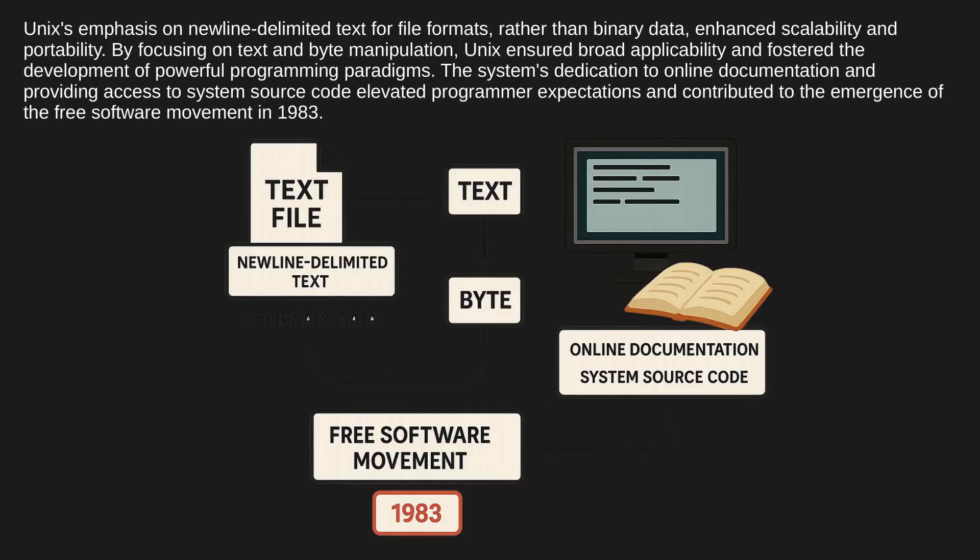Unix's emphasis on newline-delimited text for file formats rather than binary data enhanced scalability and portability. By focusing on text and byte manipulation, Unix ensured broad applicability and fostered the development of powerful programming paradigms. The system's dedication to online documentation and providing access to system source code elevated programmer expectations and contributed to the emergence of the free software movement in 1983.